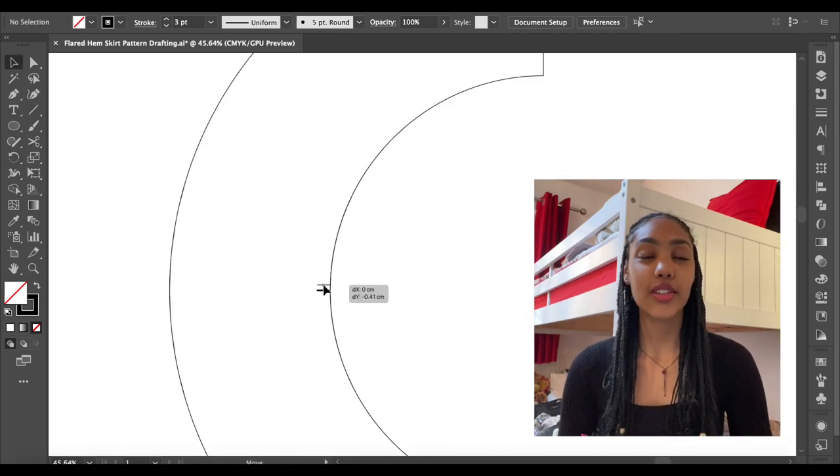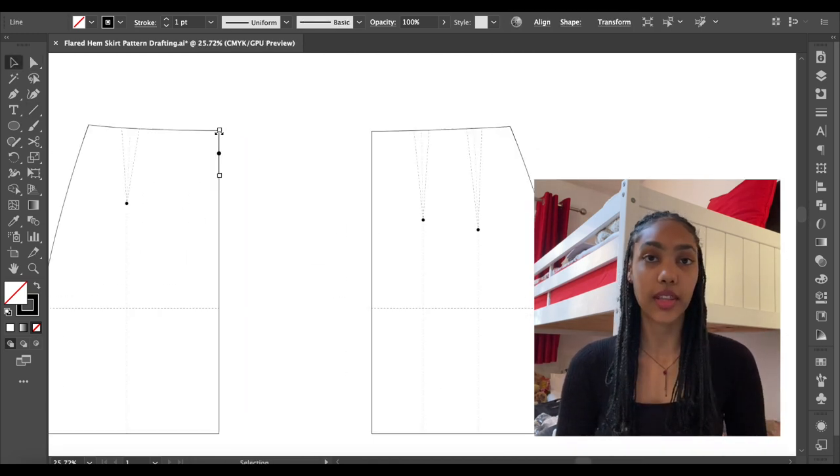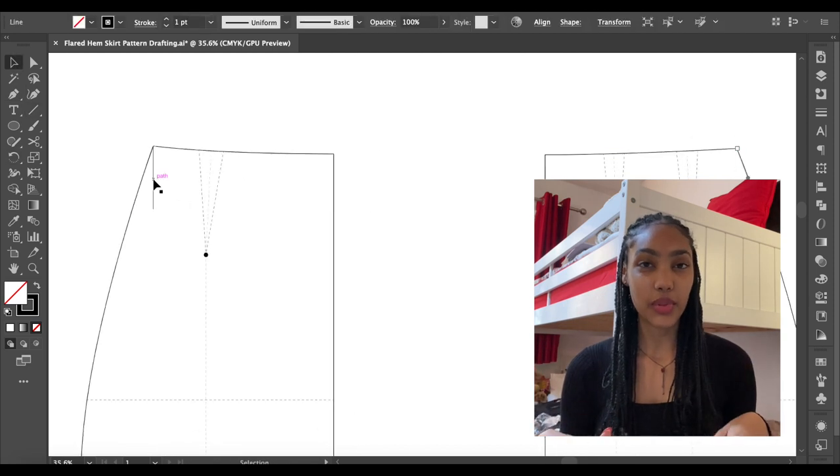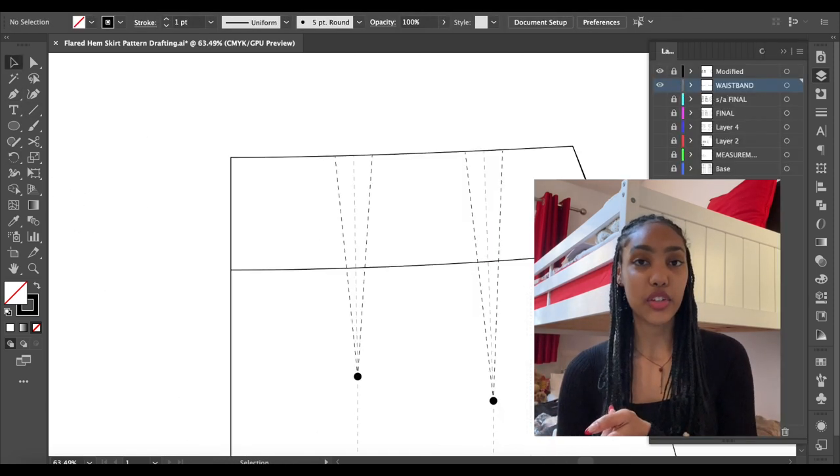so I decided to scrap that and go for something that I can see myself wearing maybe to work and stuff like that. Maybe in the future I'll give it a try, so I just went for a simpler design which is just the flounce. I mapped that out in Illustrator and then I started to edit my pattern.